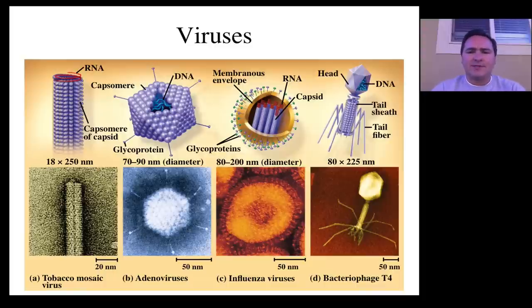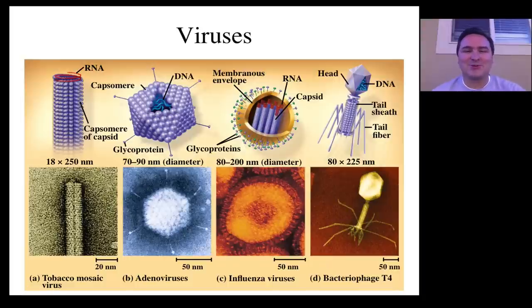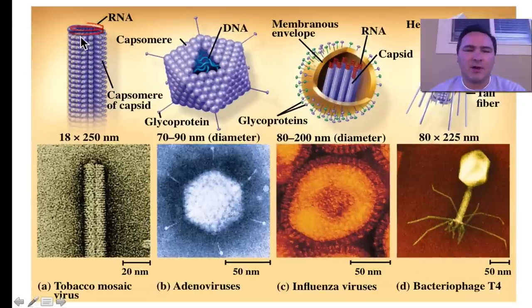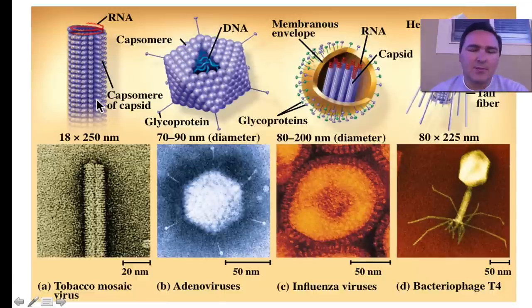So viruses are this amazing group — and some people would classify these things as organisms, others would not — but there are these group of biological entities that can be very simple, such as over here where you have just an RNA coil with these capsomeres around it, these capsids that come around it.